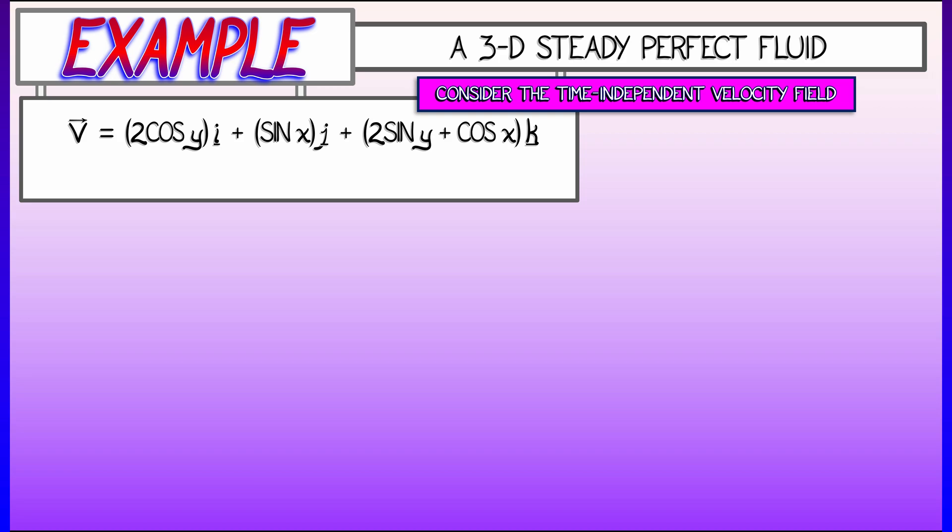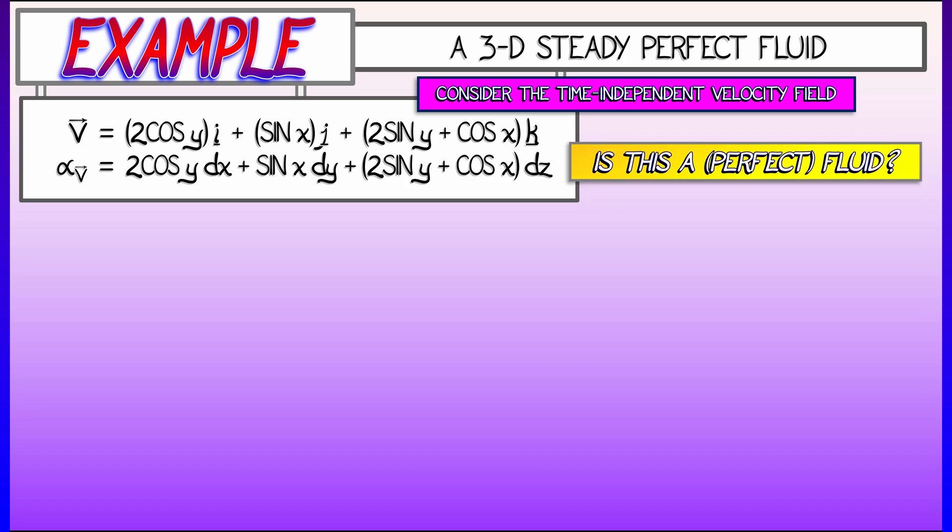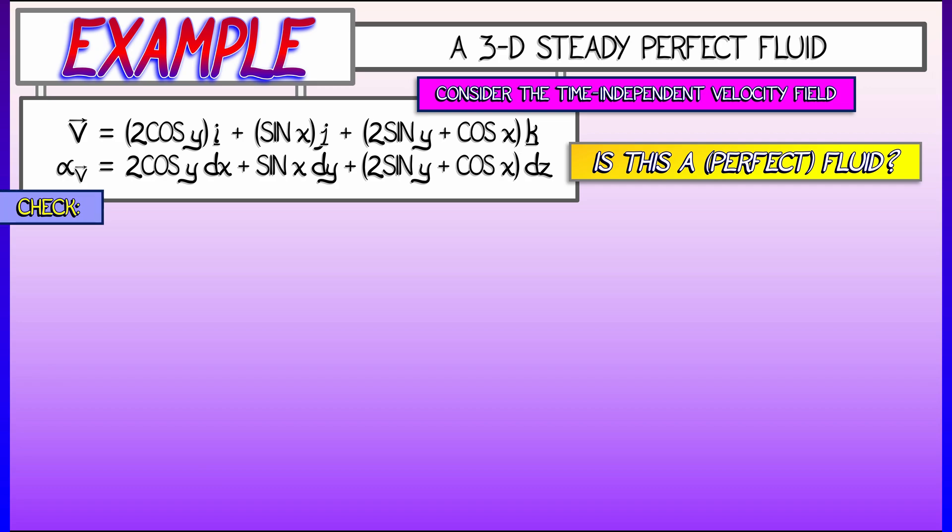Now, the first thing that I'm going to do is convert that velocity vector field into a one form field, alpha sub v. I'm going to do that by simply replacing i, j, and k with dx, dy, and dz, respectively. Okay, so is this a perfect fluid? Does it satisfy the Euler equations? Well, let's check. Let's start computing derivatives.